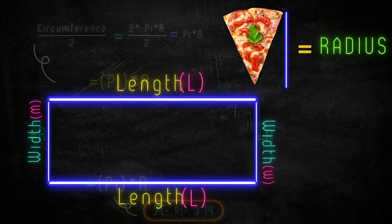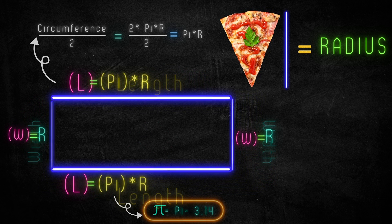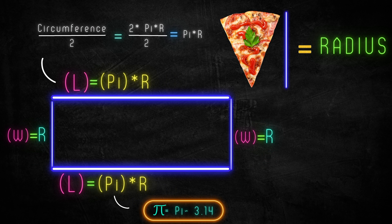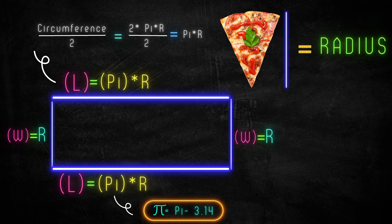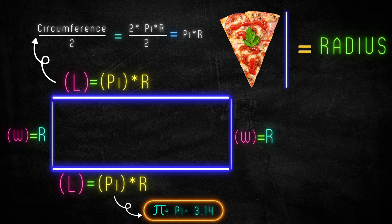The length and width are compared to the circumference of the circle. The longest side is equal to half the circumference of the circle. We know that the circumference of a circle is 2πr, so half of that is πr. The smallest side is the width, and this is equal to the radius of the circle.